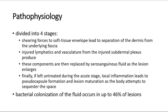The pathophysiology is divided into four stages. Shearing forces to the soft tissue envelope lead to separation of the dermis from the underlying fascia. Injured lymphatics and vasculature from the injured subdermal plexus produce fluid, which is then replaced by serosanguinous fluid as the lesion enlarges. If left untreated during the acute stage, local inflammation leads to pseudocapsule formation and lesion maturation as the body attempts to sequester the space.